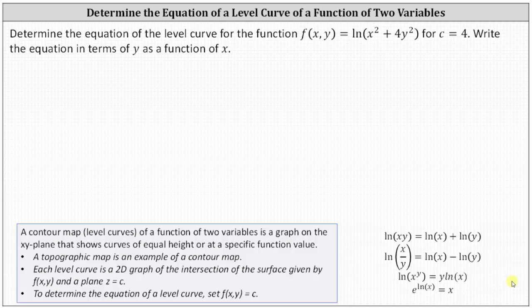To determine the equation of a level curve, we set f(x, y) equal to c, and in our case we need to solve for y. Remember, each level curve is a 2D graph of the intersection of the surface given by f(x, y) and a plane z = c, where c is a constant.